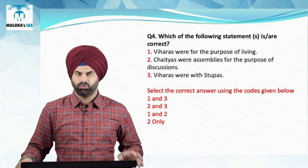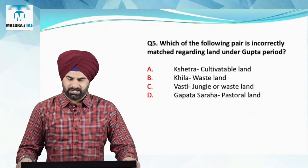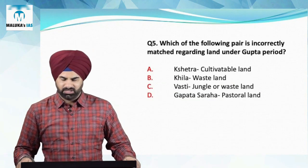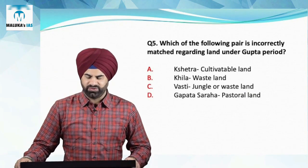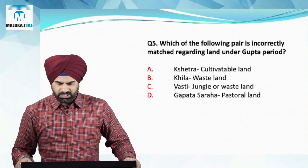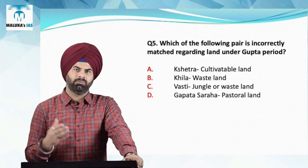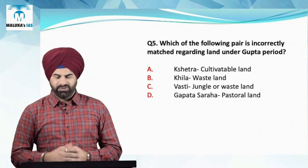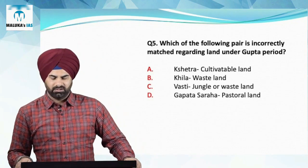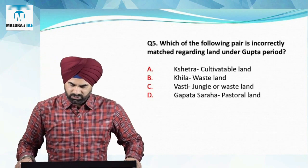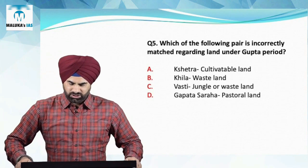Therefore for question number four, C becomes the answer with first and second statements correct. Question number five asks which pair is incorrectly matched regarding land types under the Gupta period. Shetra means cultivated land — correct. Khila means wasteland — correct. Vasti is wrongly described as jungle or wasteland; Vasti was actually habitable land where people stayed. Aparahata refers to jungle or wasteland.